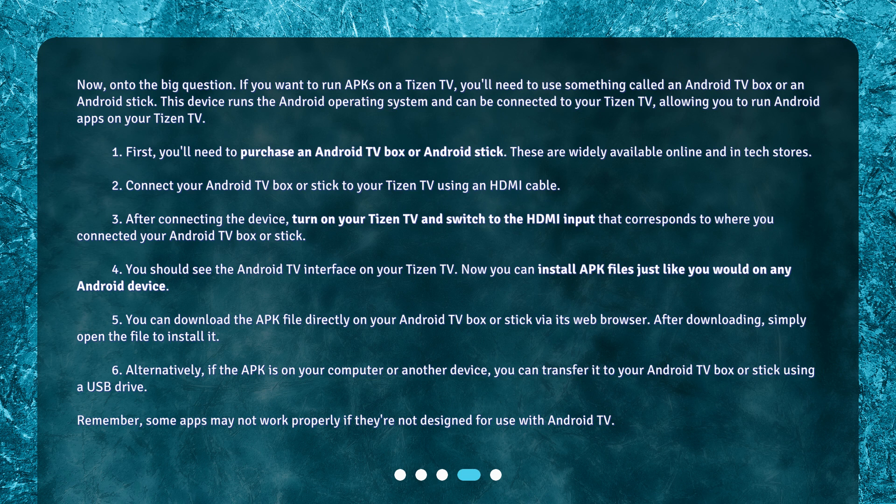Step 5: You can download the APK file directly on your Android TV box or stick via its web browser. After downloading, simply open the file to install it. Step 6: Alternatively, if the APK is on your computer or another device, you can transfer it to your Android TV box or stick using a USB drive. Remember, some apps may not work properly if they're not designed for use with Android TV.